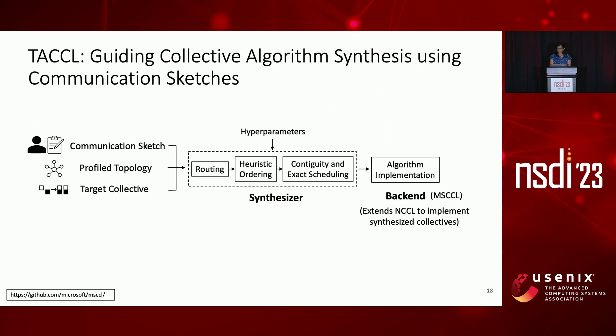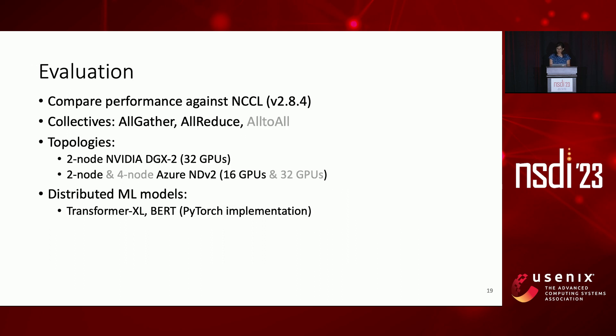To wrap up Tackle's workflow, the synthesized algorithm is then lowered into an executable format that can be run in place of a NCCL algorithm. For evaluation, we compare algorithms generated by Tackle against NCCL for widely used collectives like all-gather and all-reduce, and for different topologies like NVIDIA DGX2 and Azure NDV2. We also compare the end-to-end performance of distributed models Transformer XL and BERT on their most popular PyTorch implementation.